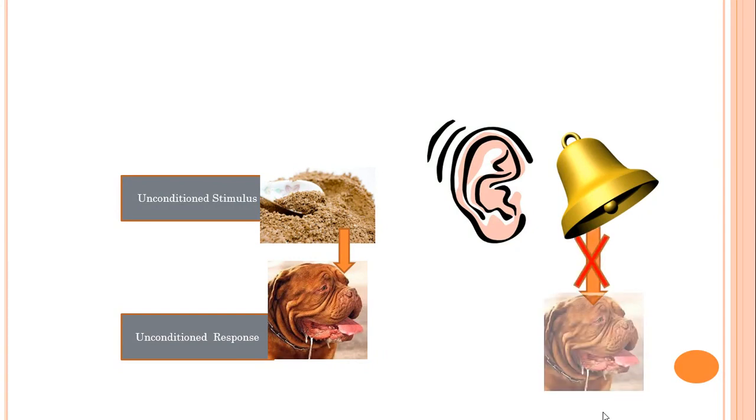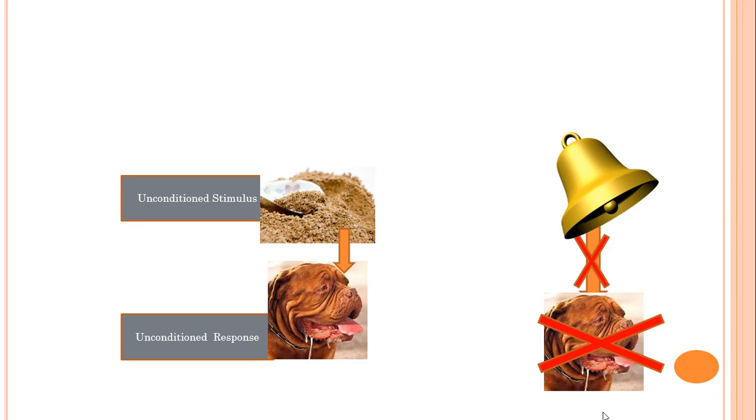On the other hand, a dog is not going to salivate to the bell ringing. You can ring a bell in front of a dog essentially forever, and that dog is never going to think that bell sounds yummy. That's not natural.